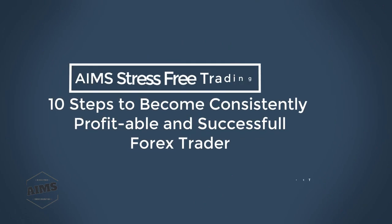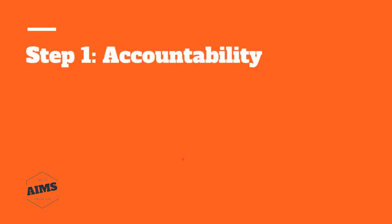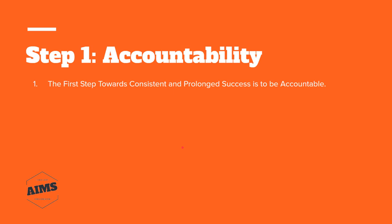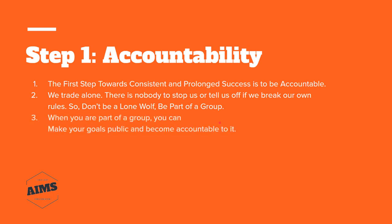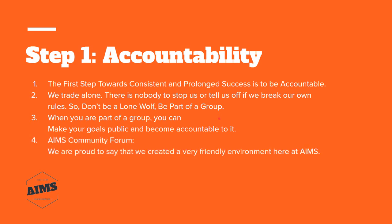Step one is accountability. You have to be accountable to yourself to become successful. The first step towards consistent and prolonged success is to be accountable — but accountable to who? We trade alone as traders; there is nobody to stop us or tell us off if we break our own rules. So don't be a lone wolf — be part of a group. When you are part of a group you can make your goals public and become accountable. That's where AIMS comes in.